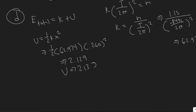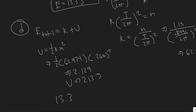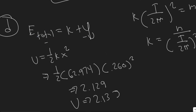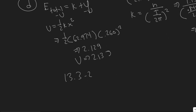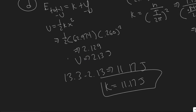Since the total energy is 13.3 joules and the potential energy is 2.13 joules, we can solve for kinetic energy by subtracting: K = 13.3 minus 2.13, which gives 11.17 joules. So at x equals 0.260 meters, the potential energy is 2.13 joules and the kinetic energy is 11.17 joules.